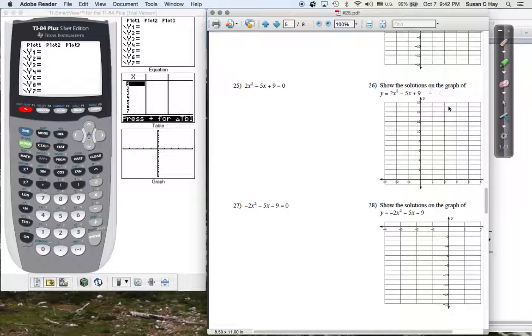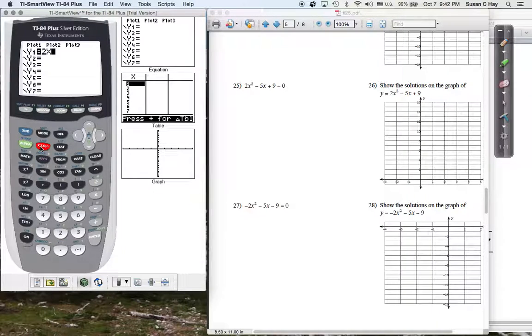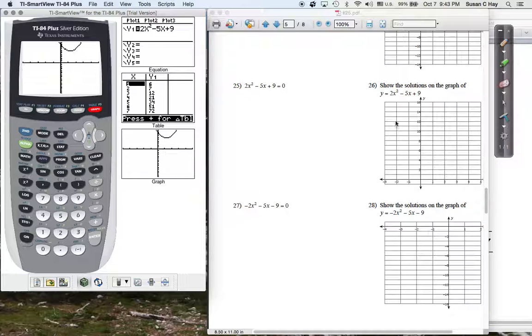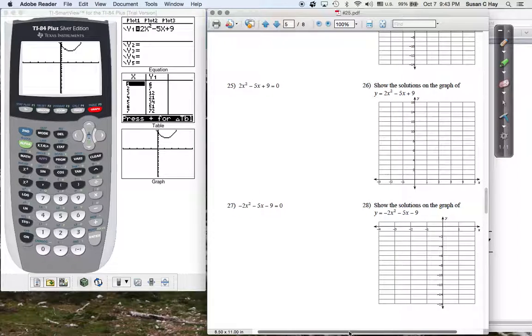But what does it mean to show the solutions on the graph? Well, you're going to show that there are no solutions on the graph. Basically, by typing this equation in: 2x squared minus 5x plus 9. And if you hit graph, whoa, the parabola is hanging up there. So you want to show that on here and notice the window that you're given here.